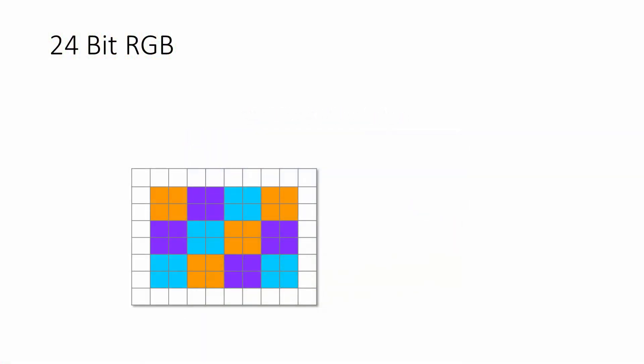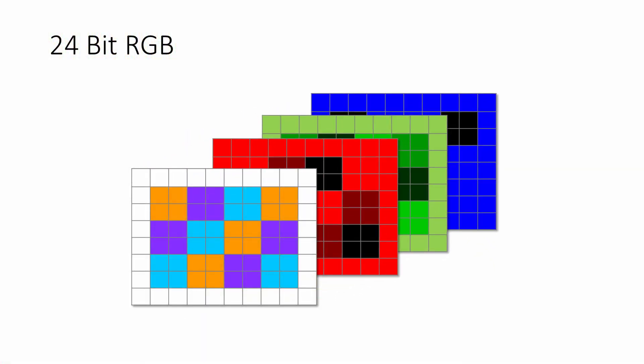In a 24-bit RGB bitmap, the amount of red, green and blue in each pixel are encoded separately. Each of these three colours is known as a channel. This means you can think of an RGB image as three separate bitmaps combined together — one with all the different intensities of red, one with all the intensities of green and one with all the blue. What you actually see is a combination of the three channels.